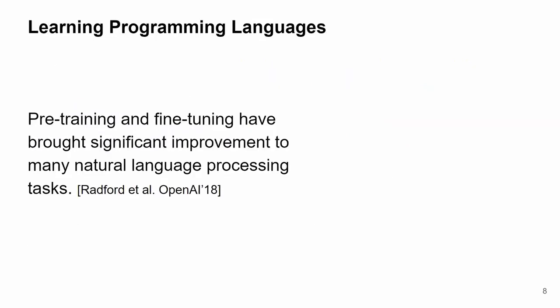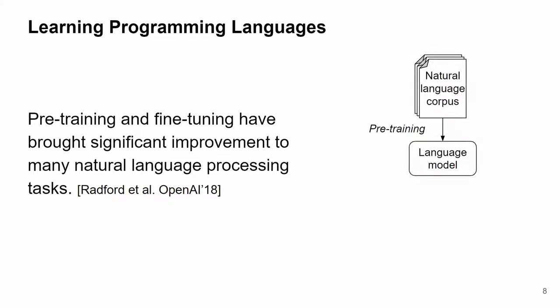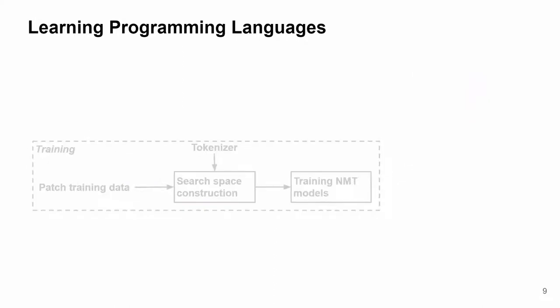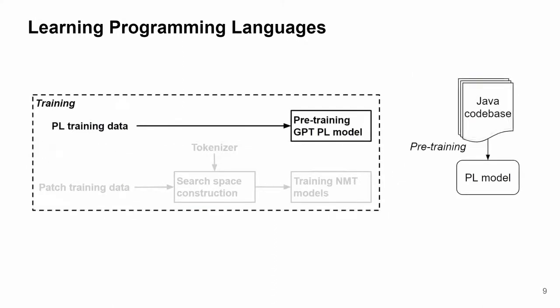To learn programming language, we borrow the pre-training and fine-tuning workflow from natural language processing fields. Pre-training and fine-tuning have brought significant improvement to many NLP tasks. One would pre-train a general language model on a large natural language corpus to learn a language — for example, English — then fine-tune the language model for a specific task like question-answering. Similarly, we pre-trained a GPT model, which refers to Generative Pre-trained Transformer, on a Java codebase to learn Java syntax. We choose GPT as the architecture of our programming language model because it's good at generation.